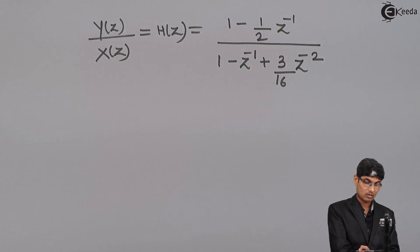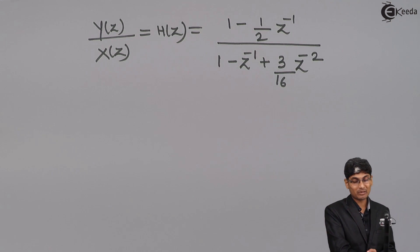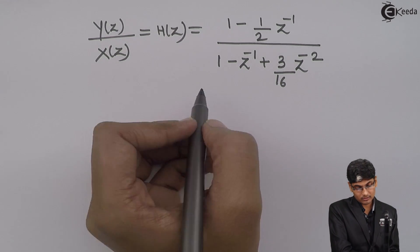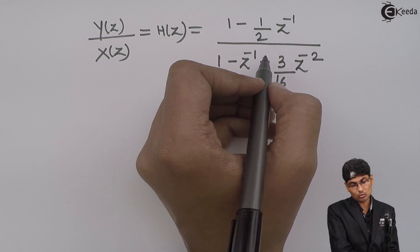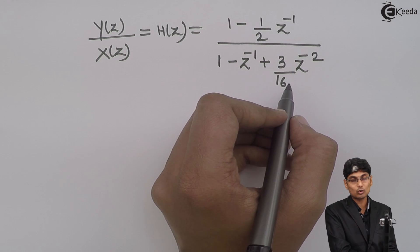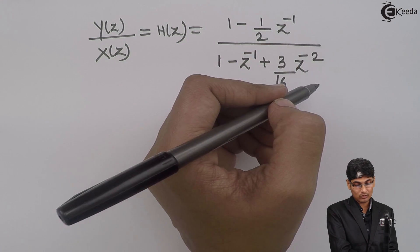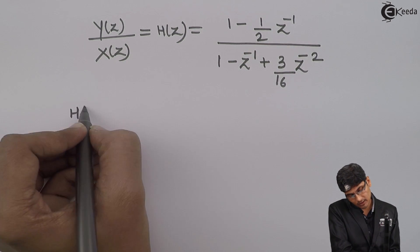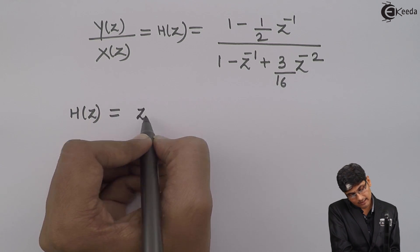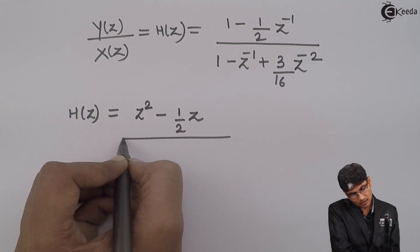This is the transfer function. To find the roots, we replace all negative powers of z with positive powers by multiplying numerator and denominator by z^2. So H(z) becomes [z^2 - (1/2)z] / [z^2 - z + 3/16].